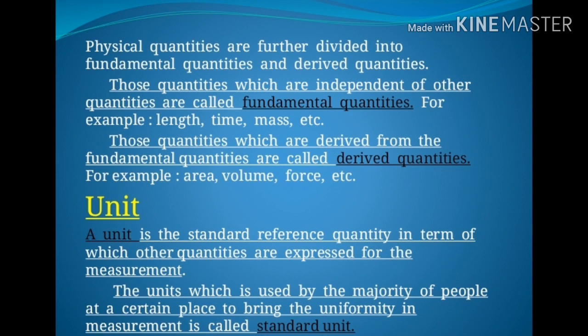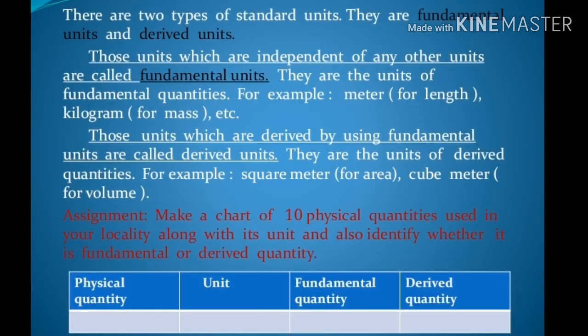The units which are used by the majority of people at a certain place to bring uniformity in measurement are called standard units. There are two types of standard units: they are fundamental units and derived units. Let me explain the fundamental physical quantity and derived physical quantity.